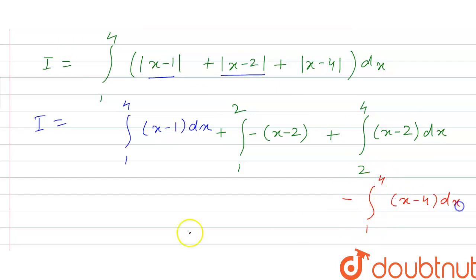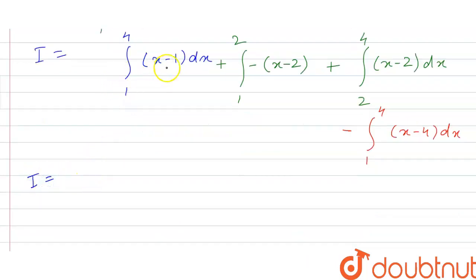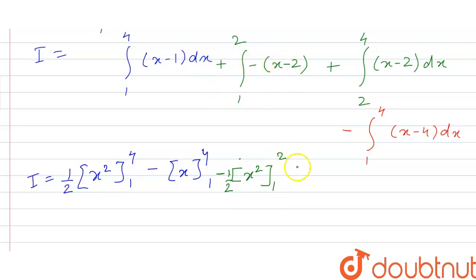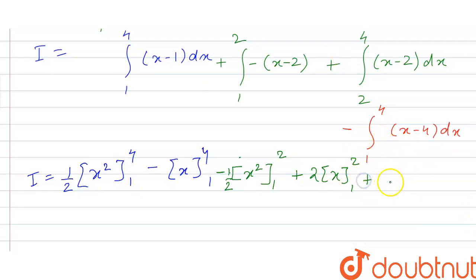From here, I will be equal to: integration of x gives x squared by 2, so we have (1/2) with limit from 1 to 4, minus integration of 1 gives x with limit from 1 to 4, and plus or minus we have integration of x giving x squared by 2 with limit from 1 to 2, and plus 2 times x with limit from 1 to 2.